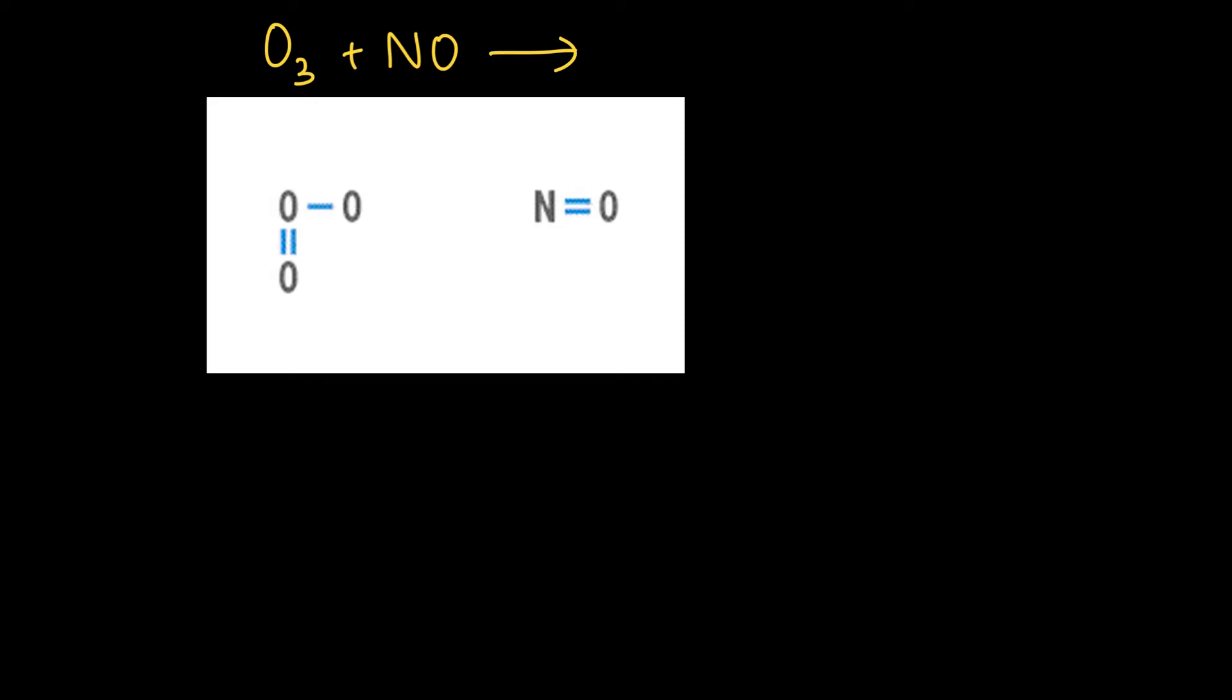For two molecules to react, they must collide. If an ozone molecule and a nitrogen monoxide molecule meet without enough energy to overcome their bond energies, a reaction does not occur and the molecules separate without reacting. We're really talking about the activation energy here. If they collide but they're too gentle, they just bump off each other. There's not enough energy for one atom to transfer to the other molecule.